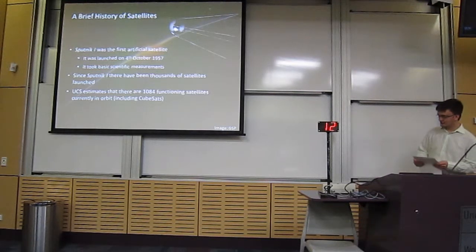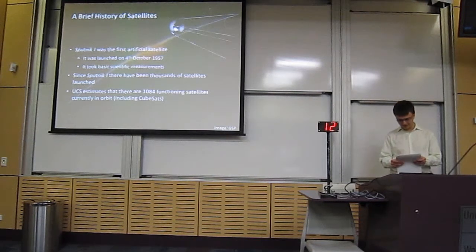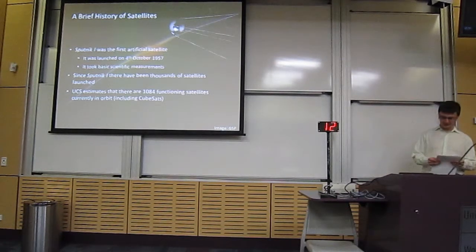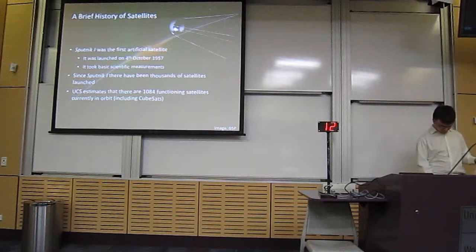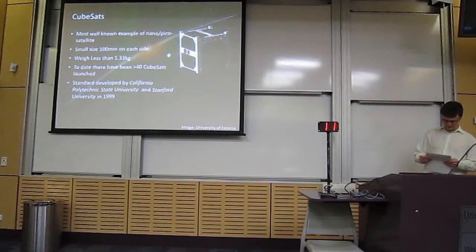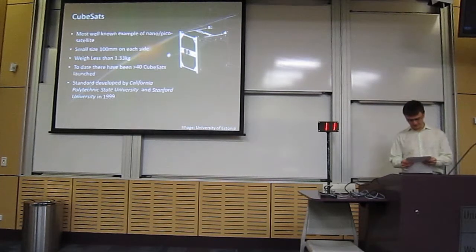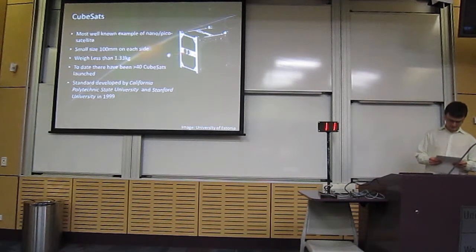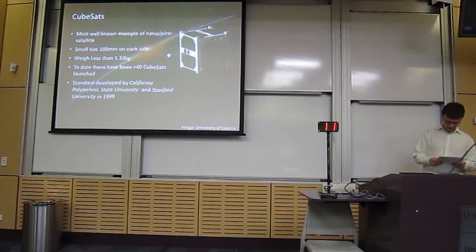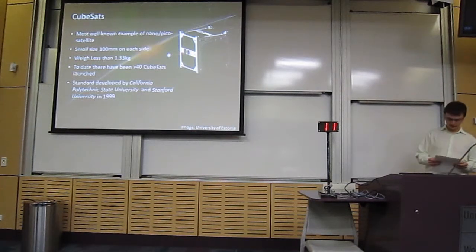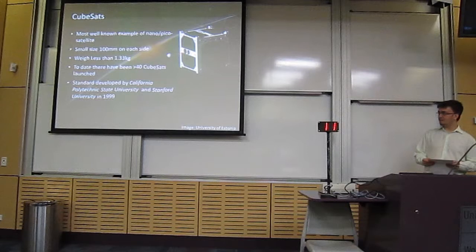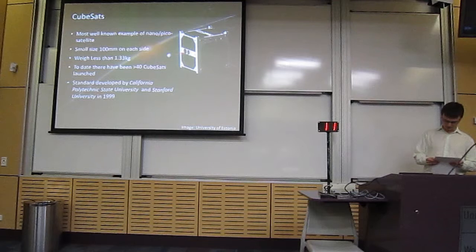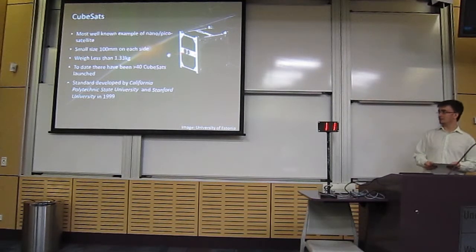The Union of Concerned Scientists estimates the number of current satellites at 1,084, and that's in all the orbits, and that includes CubeSats as well. CubeSats are the most common example of a nanosatellite. They consist of a cube, 100 millimeters on each side, and weigh less than 1.33 kilograms. Today there have been over 40 CubeSat launches, and over 100 universities all over the world have worked on CubeSat projects.